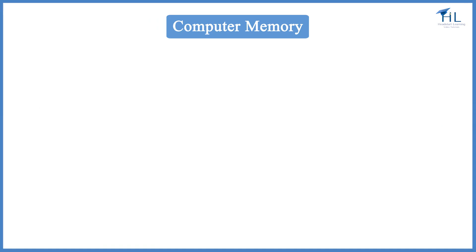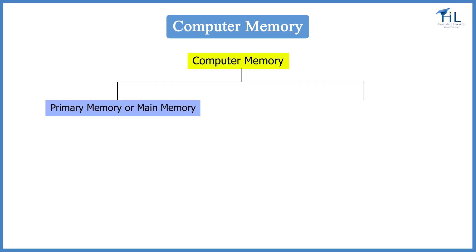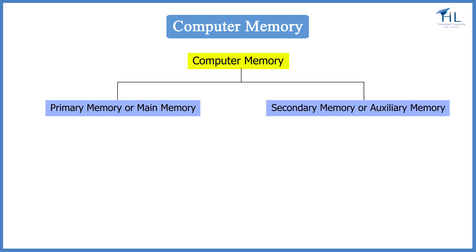Computers have two types of memory: primary memory, or main memory, and secondary memory, or auxiliary memory.